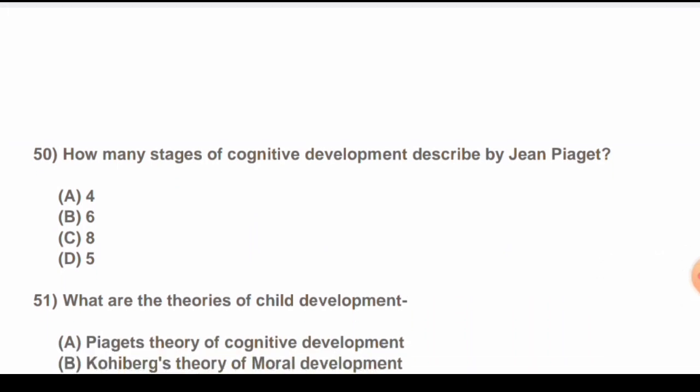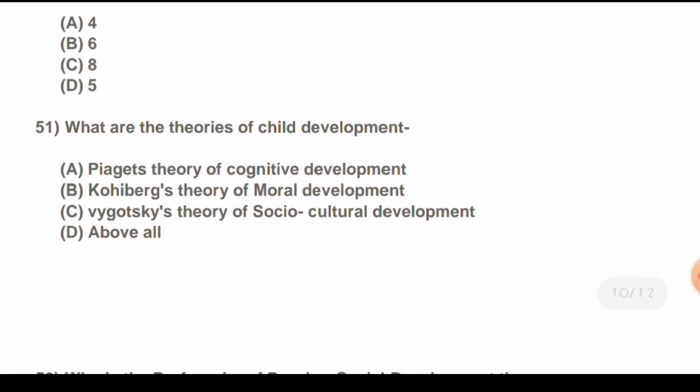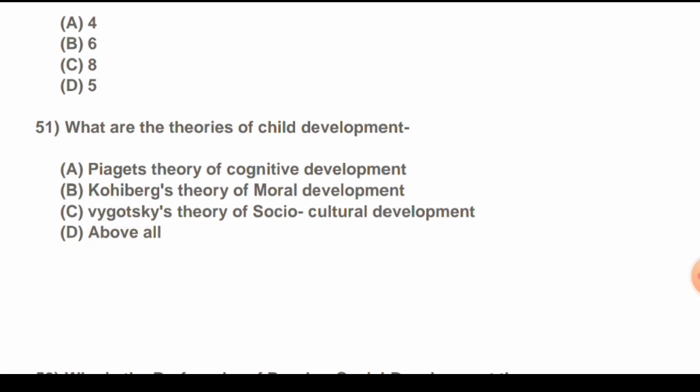Question 50: How many stages of cognitive development are described by Jean Piaget? Options are: A) 4, B) 6, C) 8, D) 5. The correct answer is A) 4. The theories of child development include: Piaget's theory of cognitive development, Kohlberg's theory of moral development, Vygotsky's theory of sociocultural development, and others — correct answer is D) All of the above.